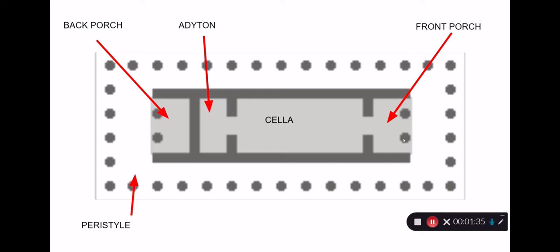Usually there's a front porch, held up with columns, and an entryway that leads into the main room of the temple. The main room is known as the cella, and this is generally where the statue of the god or goddess is kept and votive offerings are placed. It is a small room — it's not meant for public use; only the priests and priestesses are allowed in.